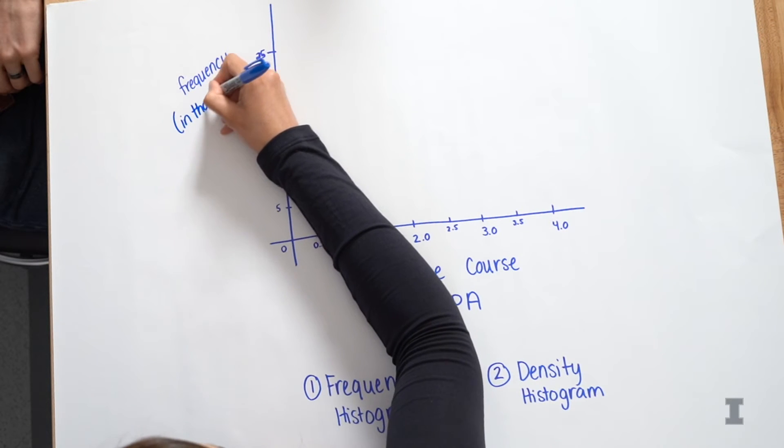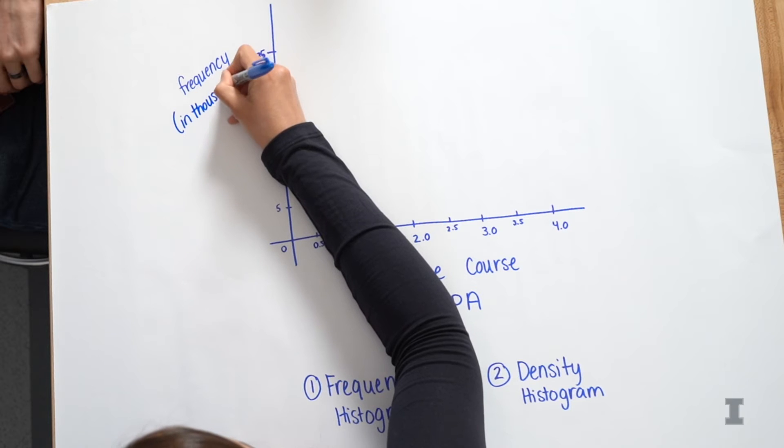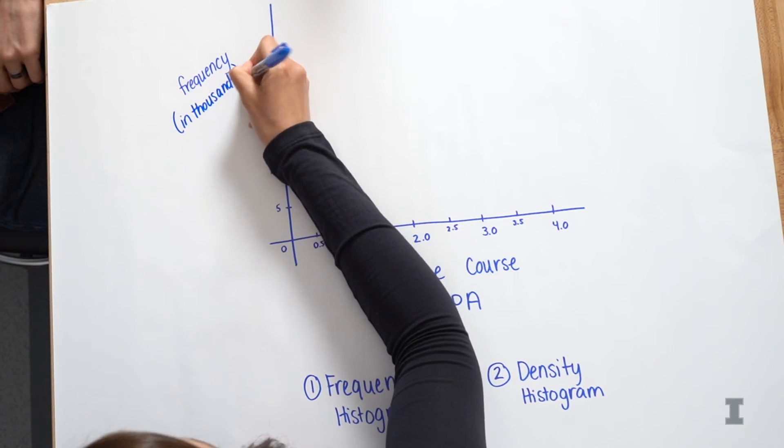In thousands. So the nice thing about both the x and y-axis is that you can make histograms on whatever scale you want to use. And so this is going to be in thousands. So 5 actually represents 5,000.